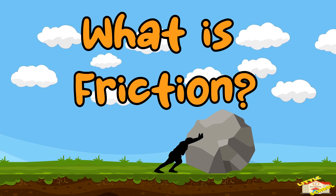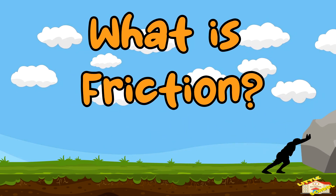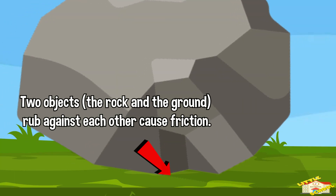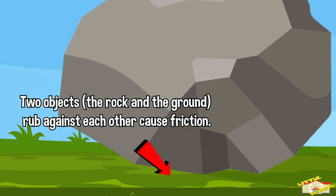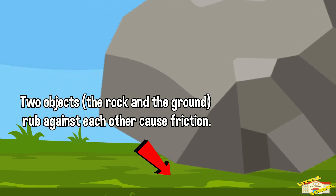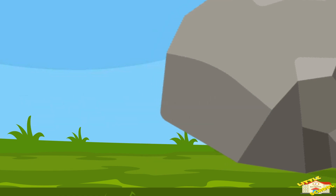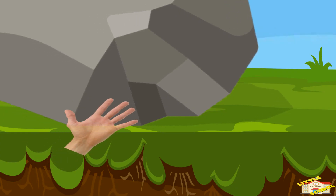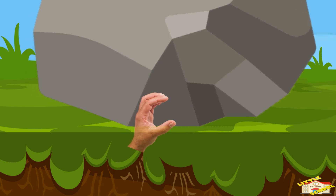So what is friction? Friction is the force that opposes the motion of objects when they rub against each other. It's like a hidden hand that tries to slow things down or stop them from moving altogether.